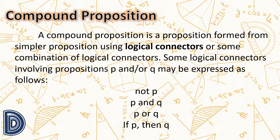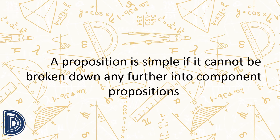Some logical connectors involving propositions P and Q may be expressed as follows: not P; P and Q; P or Q; if P, then Q — where P and Q are simple propositions. A proposition is simple if it cannot be broken down any further into component propositions.